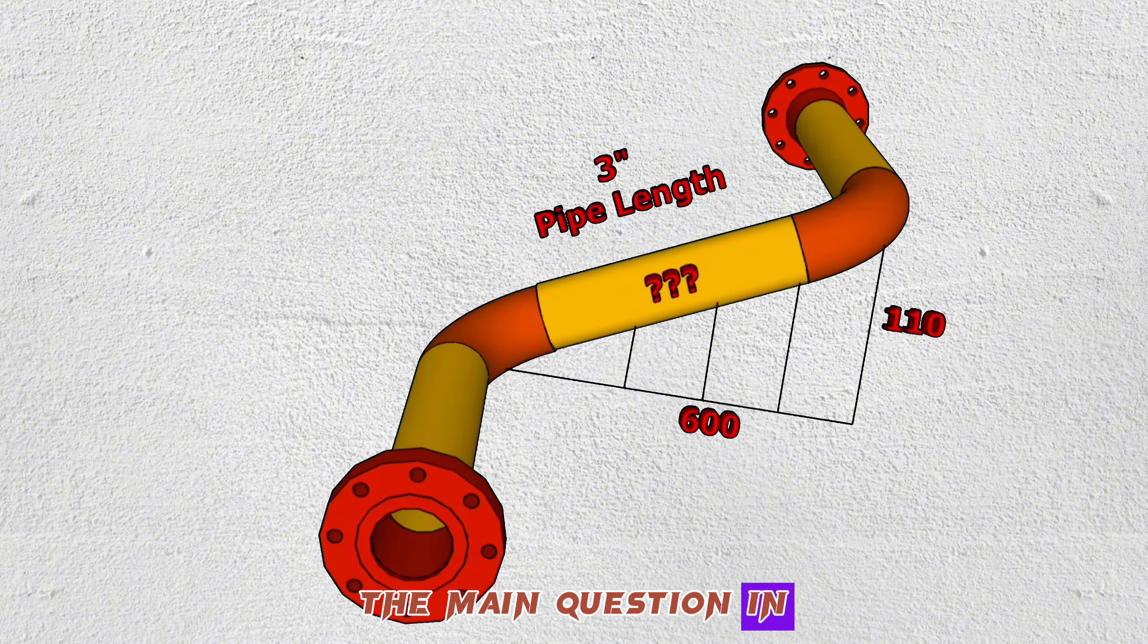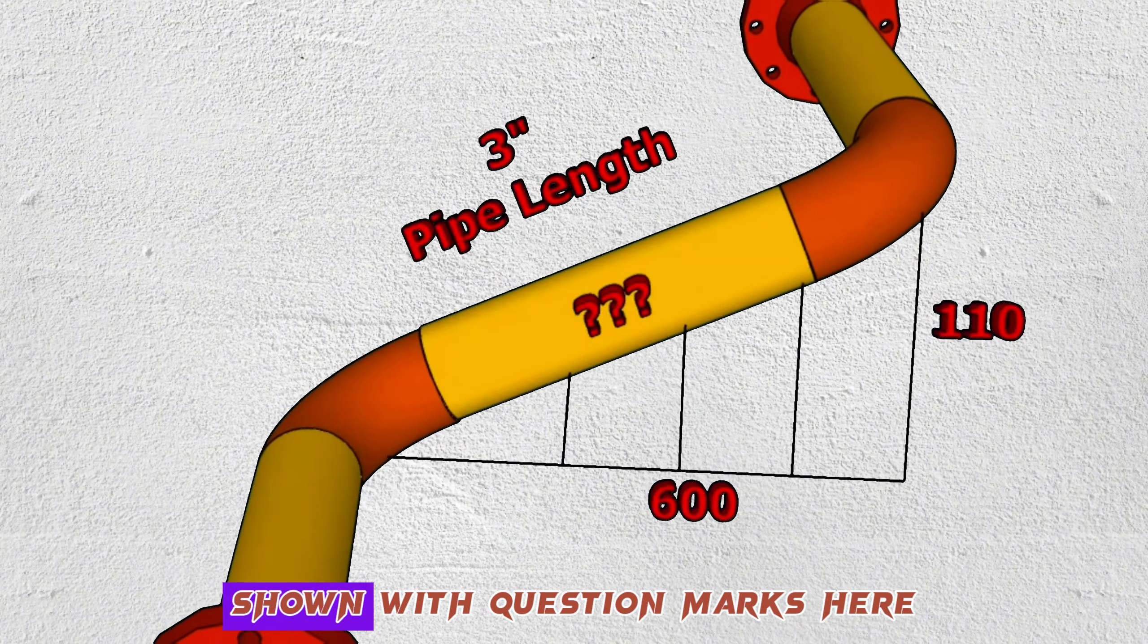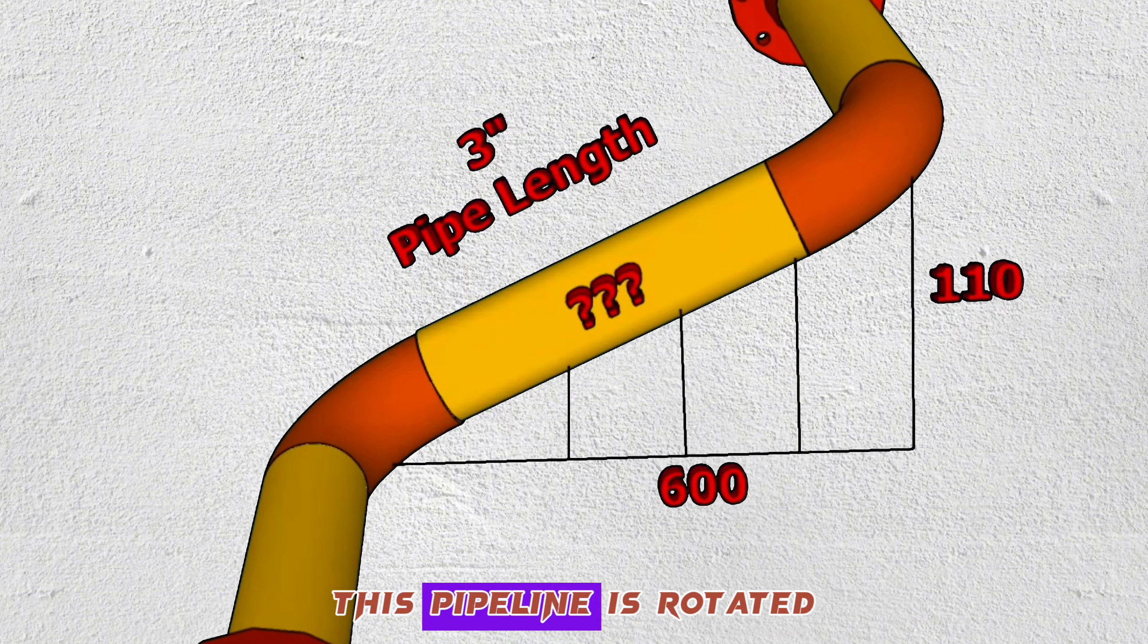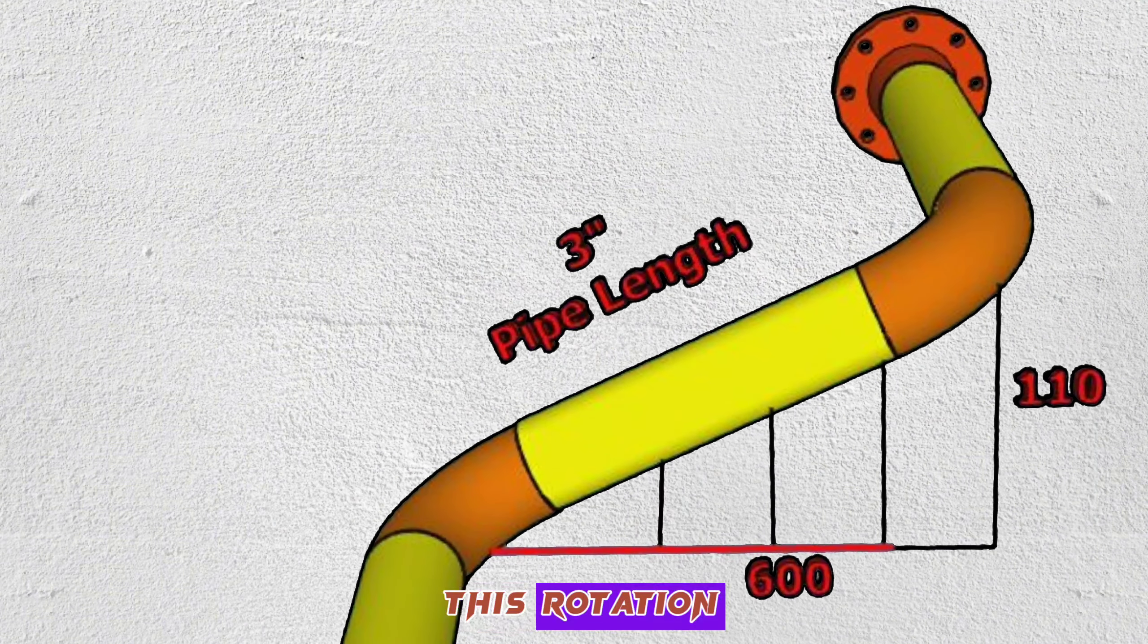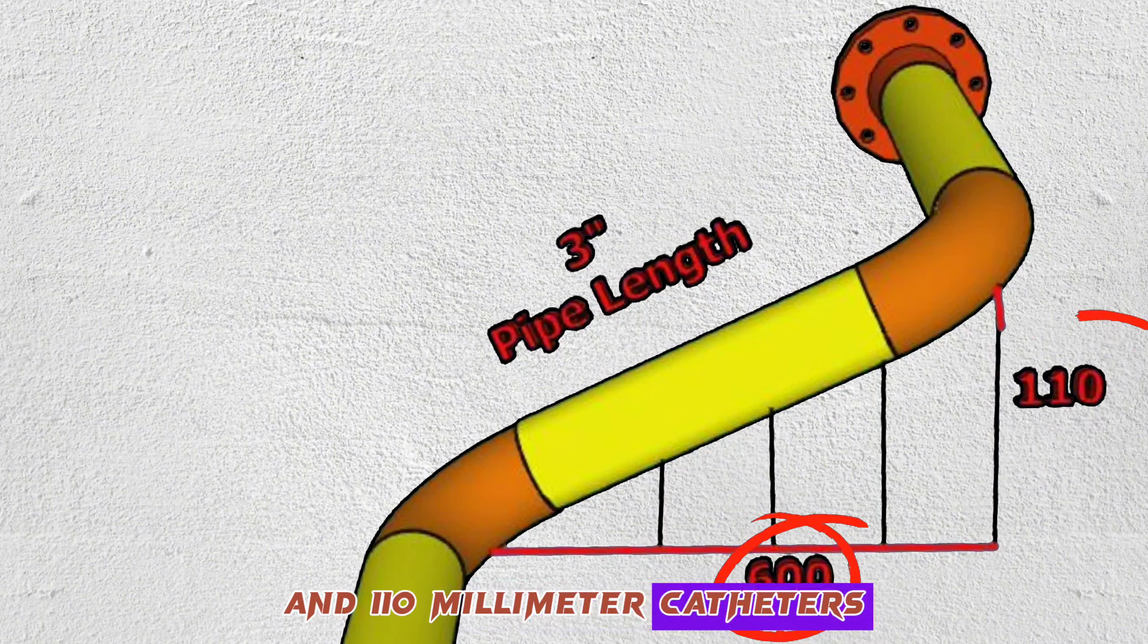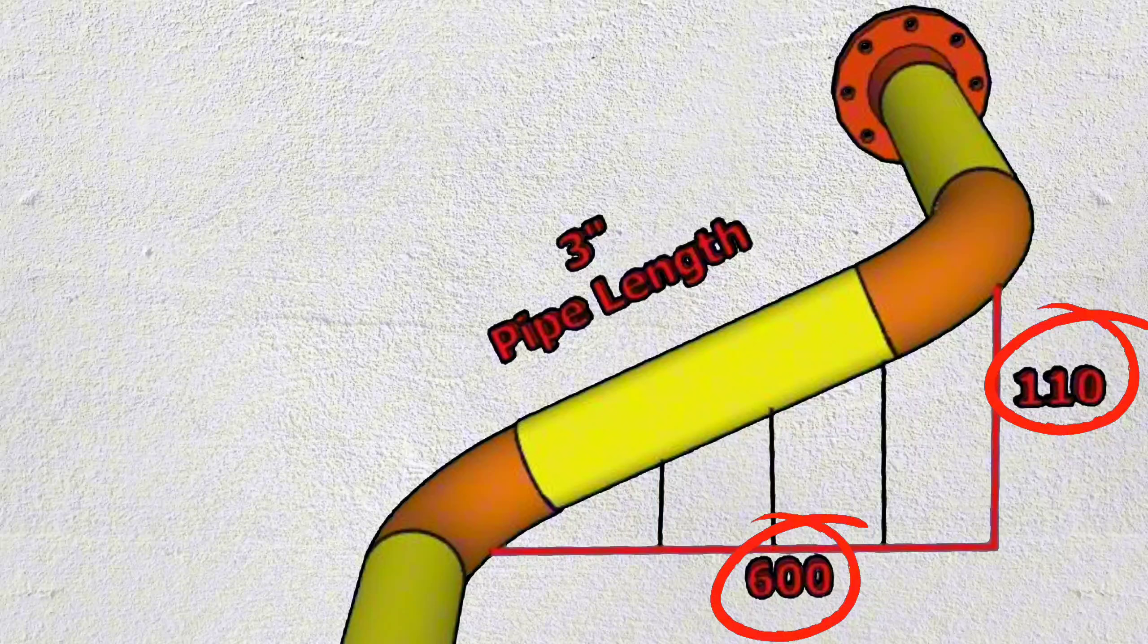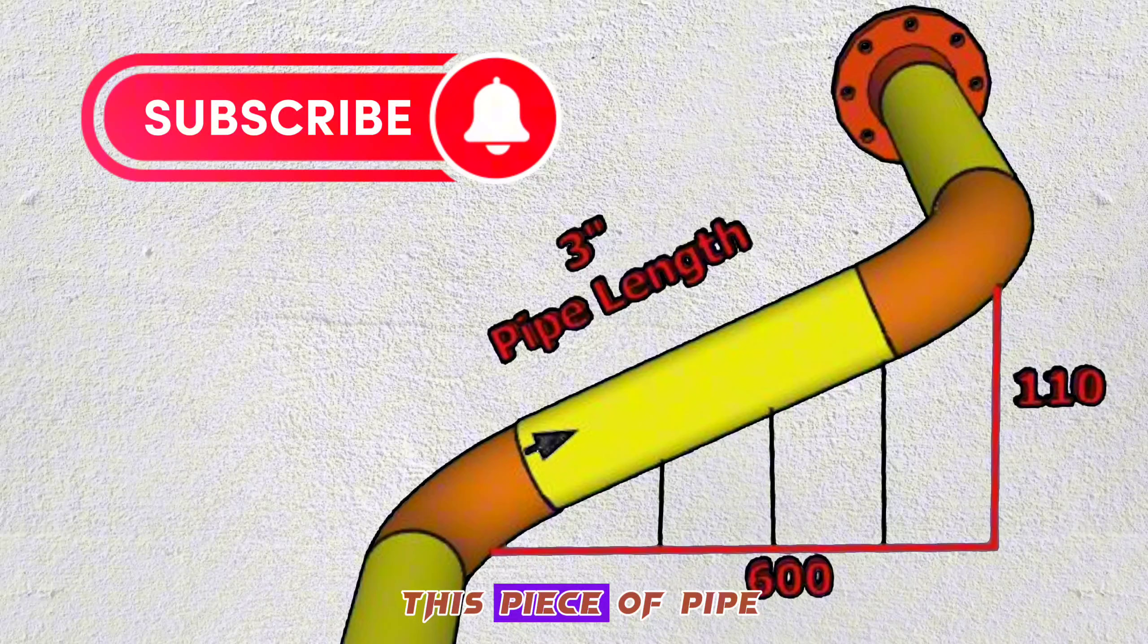The main question in this video is, we need to calculate the length of the yellow pipe shown with question marks here. This pipeline is rotated at a certain angle. As a result of this rotation, 600mm and 110mm cathodes were created here. Let's see how to calculate the length of this piece of pipe.